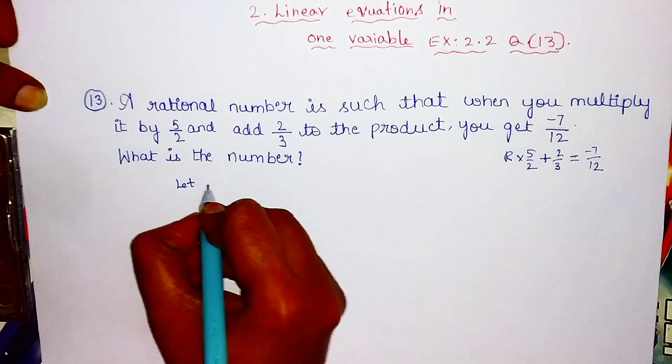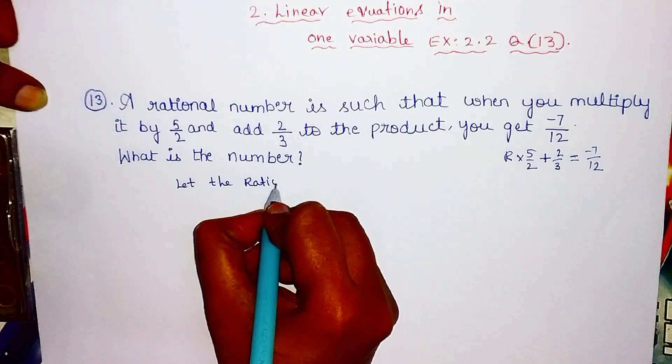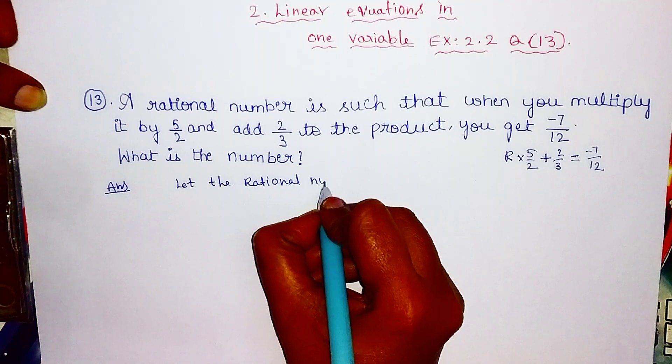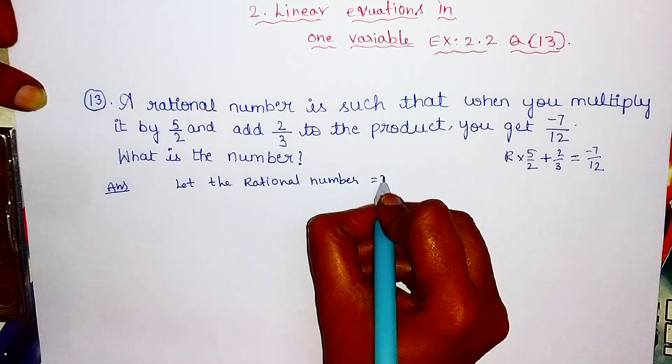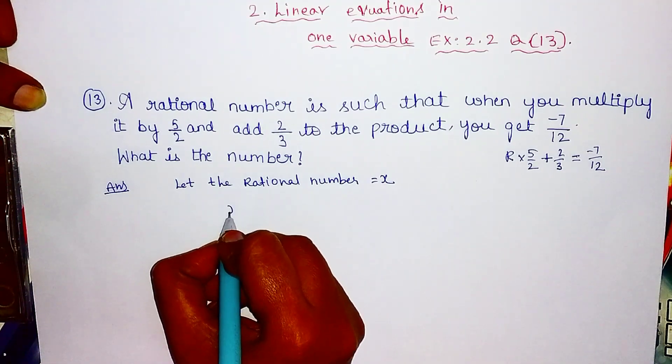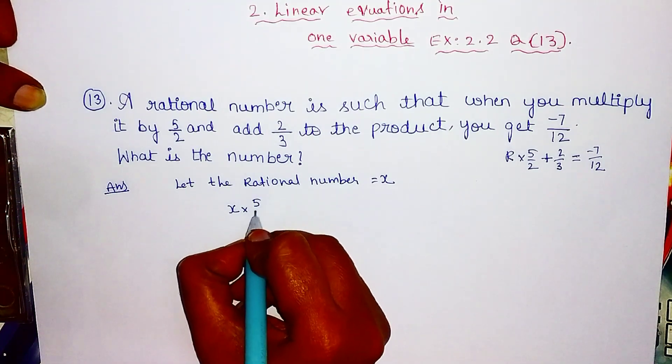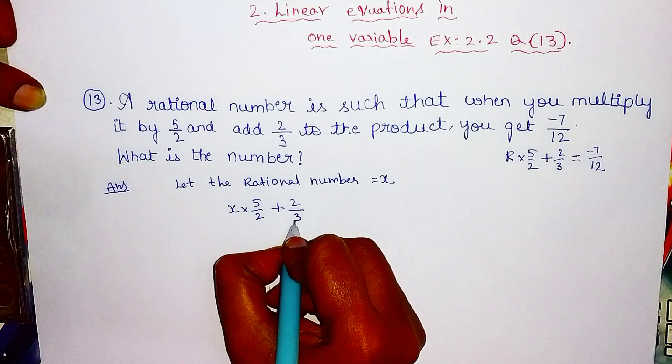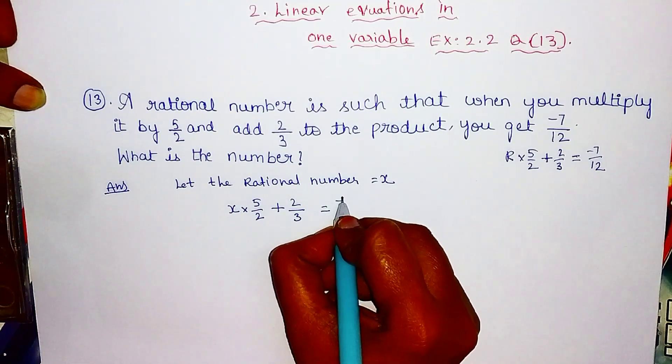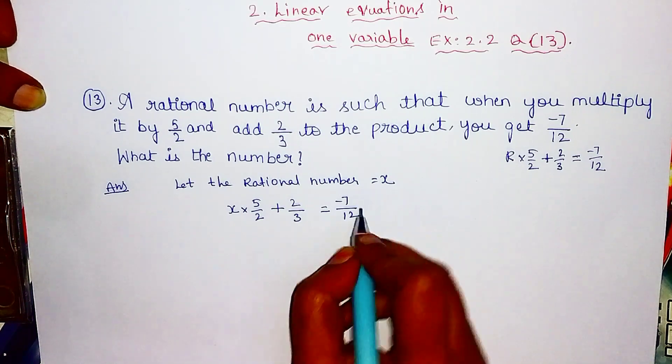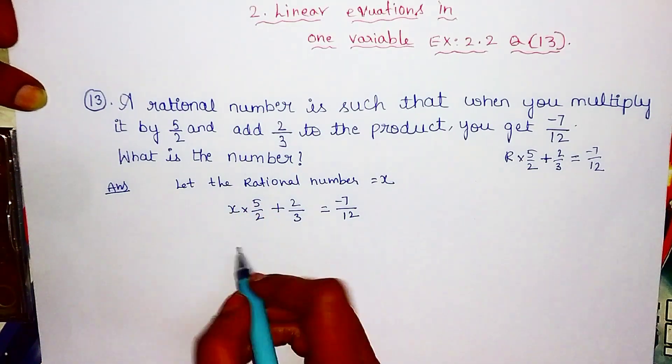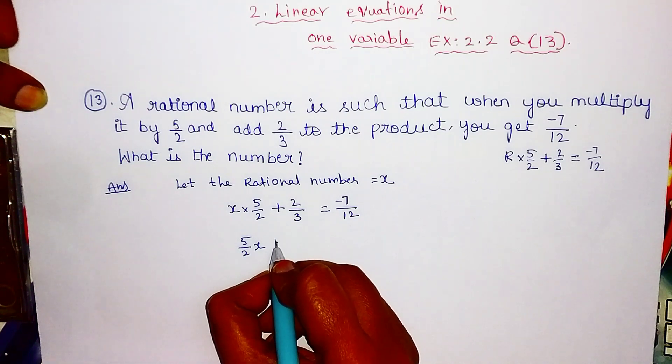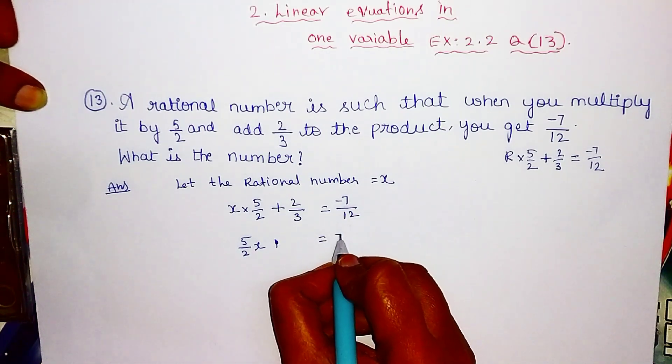Let the rational number be equal to x. The rational number is x, and the equation is equal to minus 7 by 12.